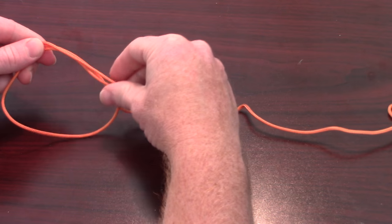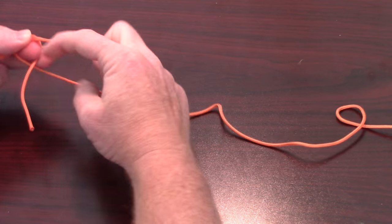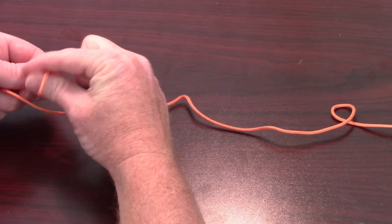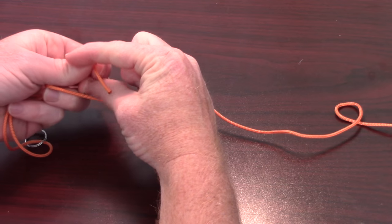and pinch that off as well. Now grasp both sides of the loop with your lower fingers and begin to wrap the tag end up both sides of the line.